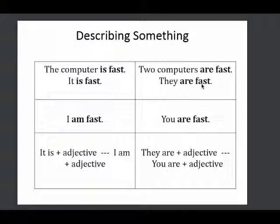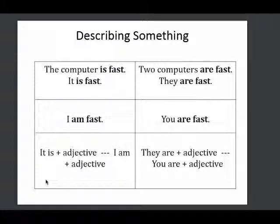I am fast. You are fast. These are singular and plural pronouns. We use a pronoun, or we can use a noun when we describe something, and we add the be verb plus an adjective. Okay, let's do some practice.